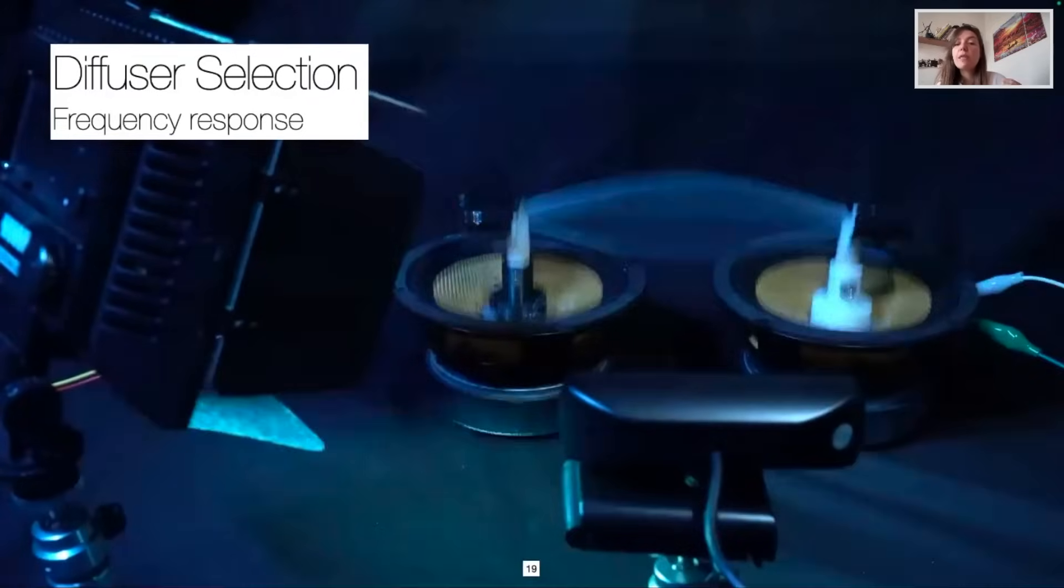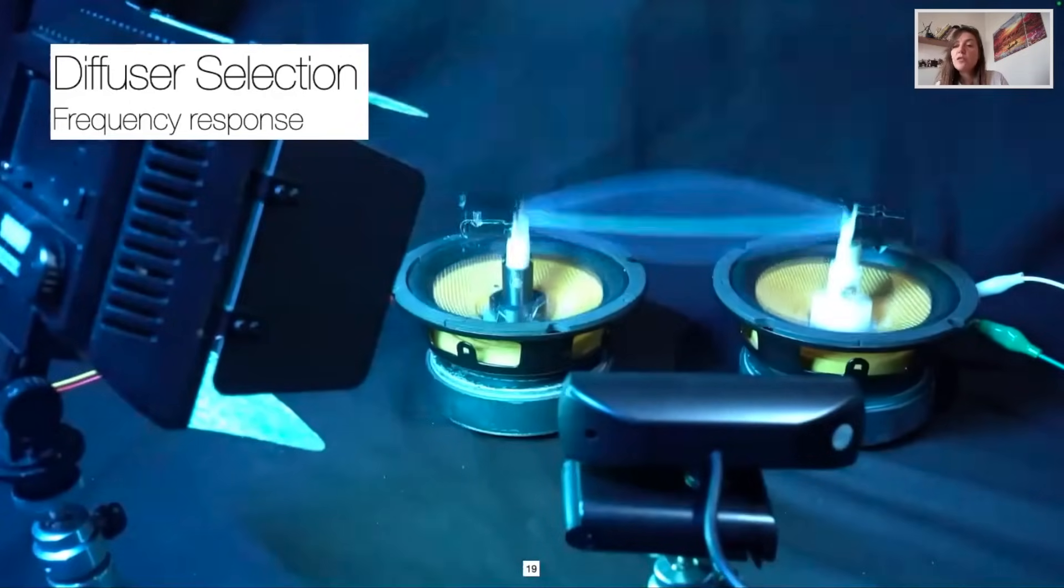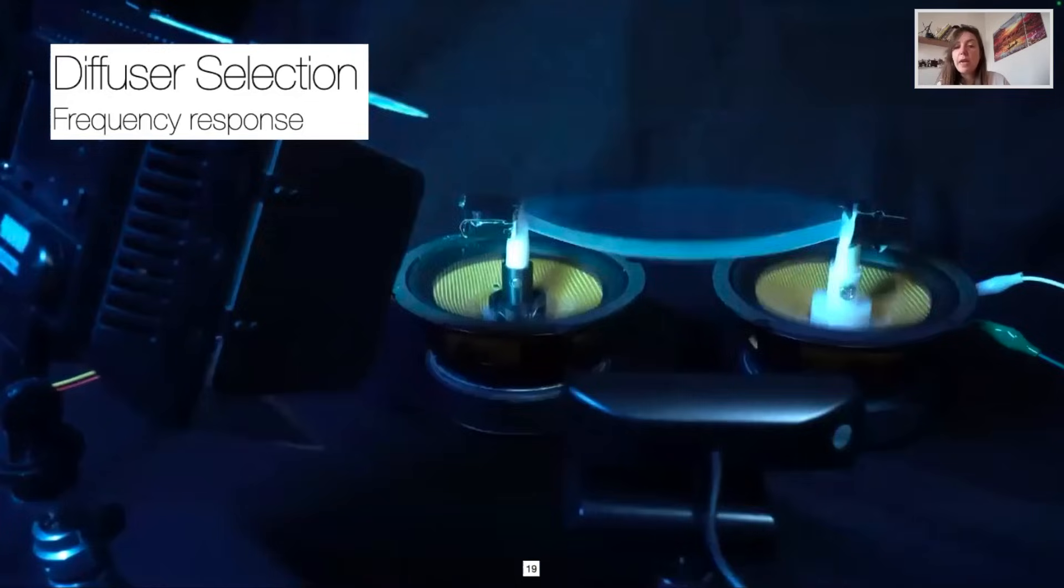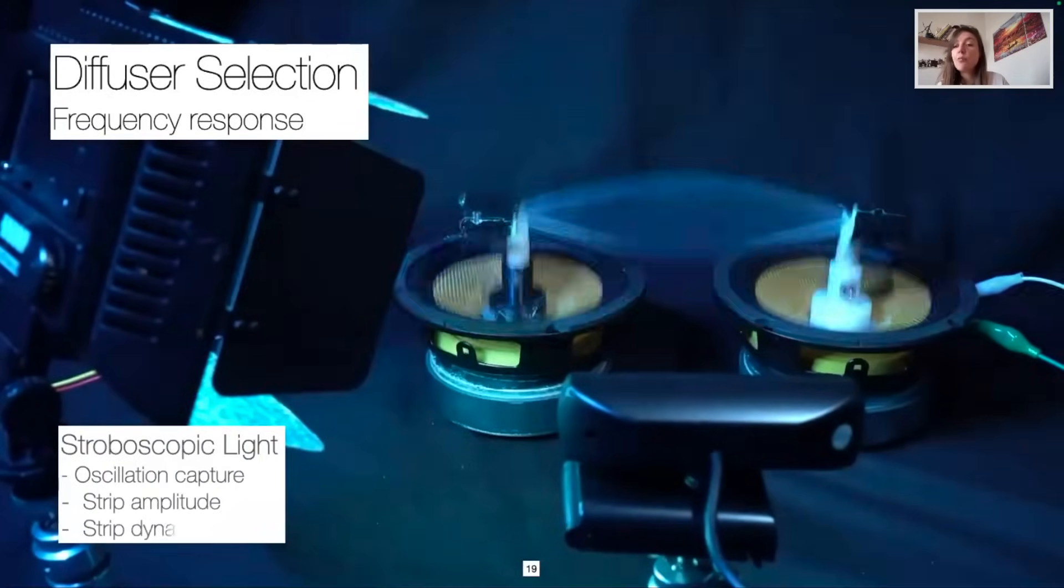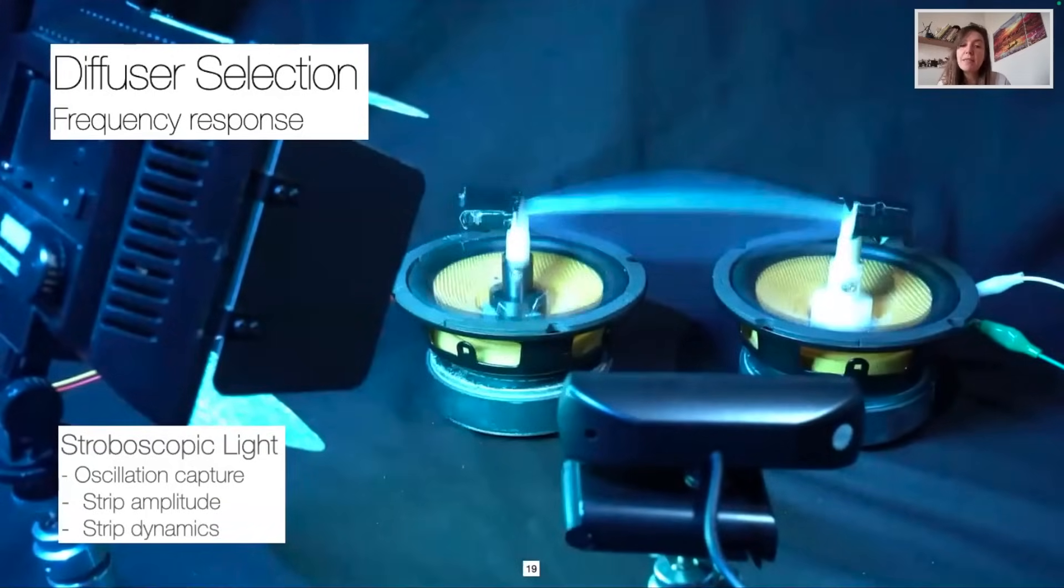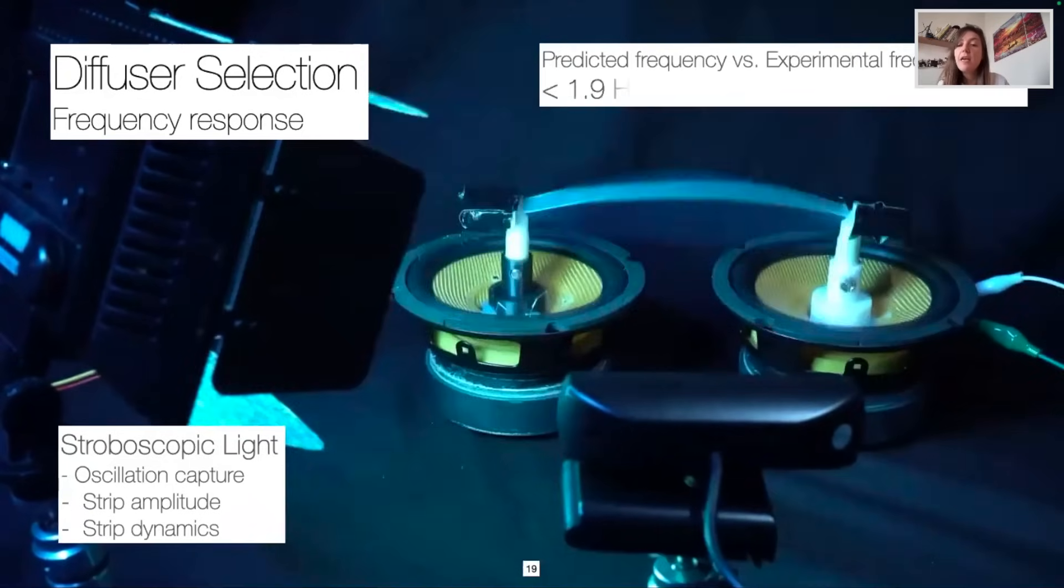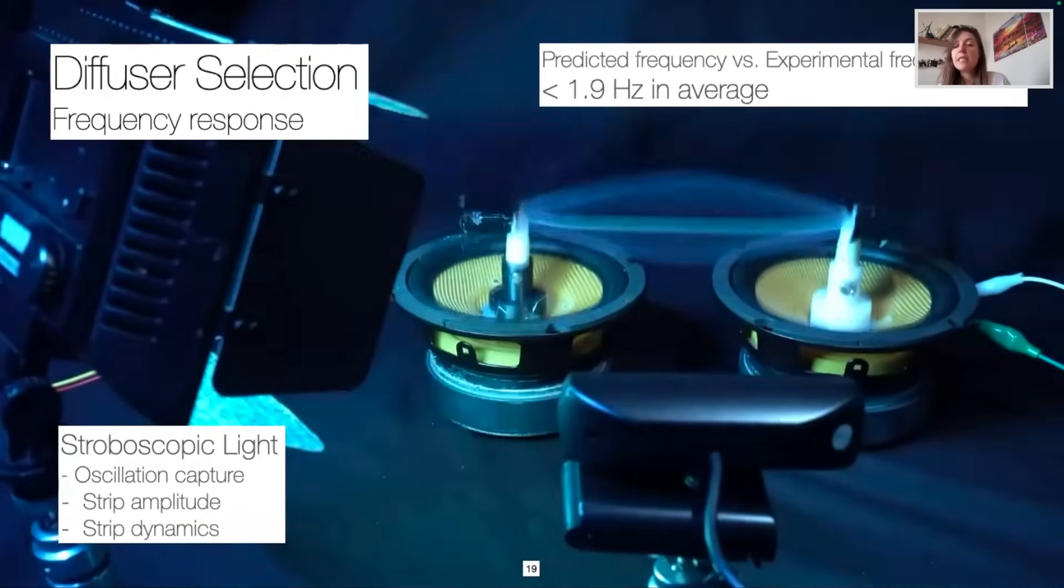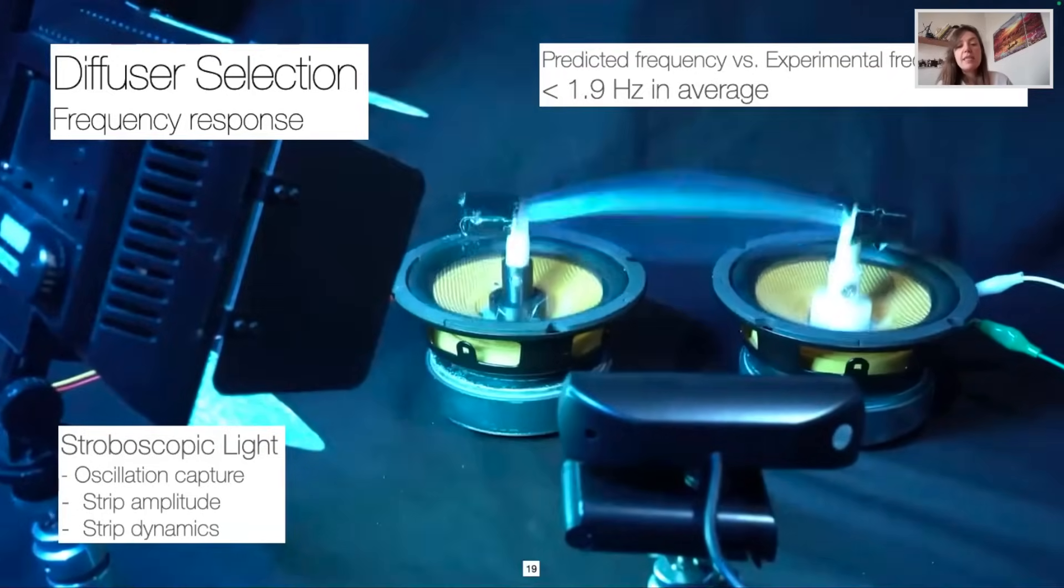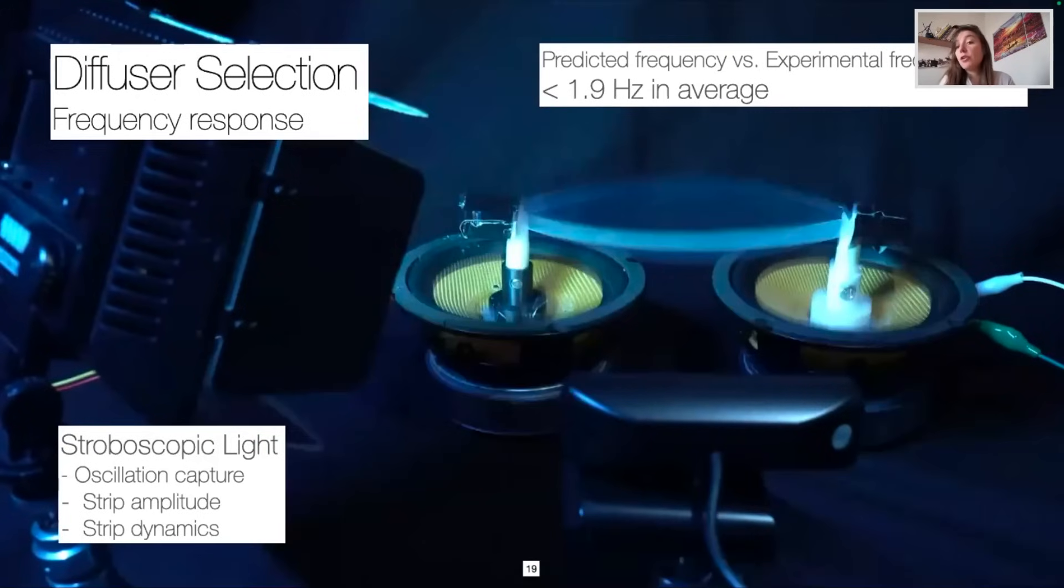Finally, we characterized the frequency responses. For this matter, we placed our samples between two speakers and increased their frequency up to resonance. We synchronized a strobe light to enable the capture of the oscillation at a regular frame rate and to observe the amplitude and shape dynamics of the strips. We then compared our experimental resonance frequency from predicted resonance frequency and had under 1.9 Hz difference in average.